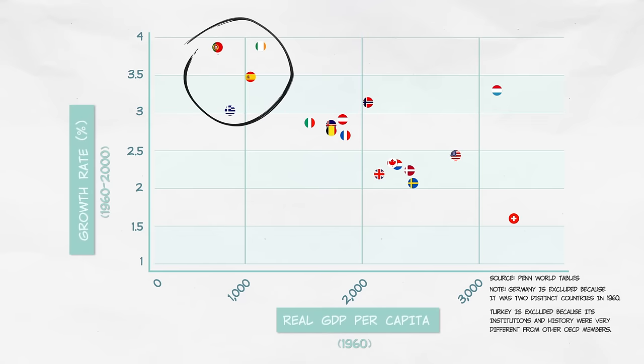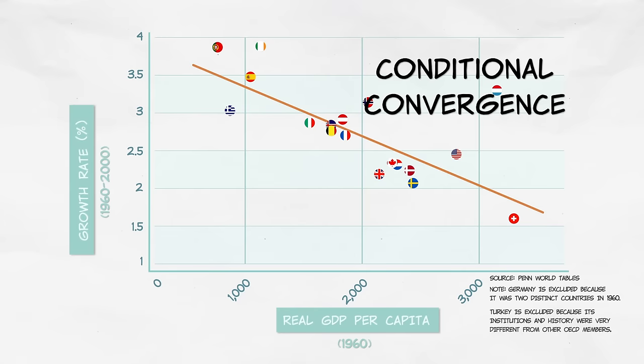The countries which were relatively poor in 1960 grew faster than the countries which were relatively wealthy in 1960. So among countries with similar institutions, there is convergence. Conditional convergence.